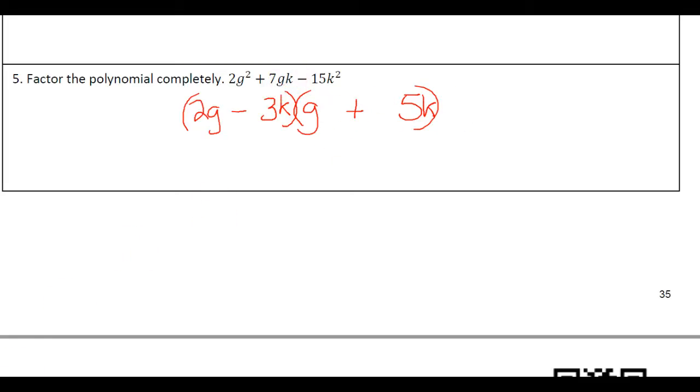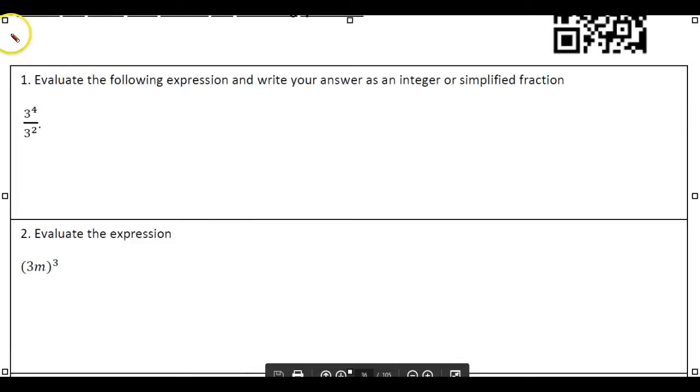All right, that looks good. Going on to page 36 now. We're going to review a little bit of exponents. Here we're going to subtract our exponents as it crosses the division bar. So this becomes 3 to the 2nd as I subtract the 2 from the 4. And this will become a 9.